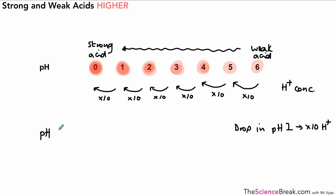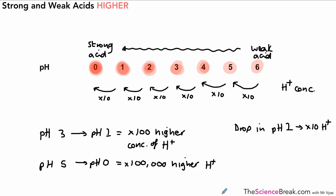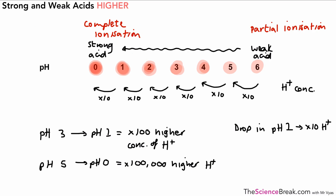So what does that mean? If we had a pH of 3 compared to a pH of 1, that's two drops in pH, so we would get 10 × 10 — overall 100 times higher concentration of hydrogen ions for a pH drop of 2. Let's go from pH 5 down to pH 0 — that would be 100,000 times higher concentration of hydrogen ions as a result of a drop of 5 in pH. So every time we go down by 1 pH, 10 times higher concentration of hydrogen ions. For a weak acid there's partial ionization, and for a strong acid there's more complete ionization and therefore a stronger acid.